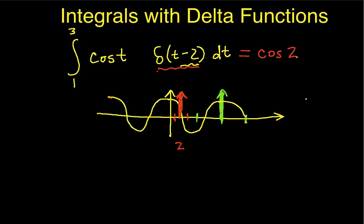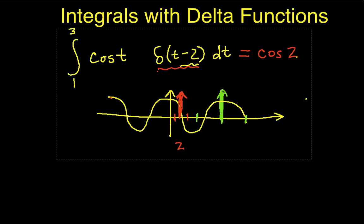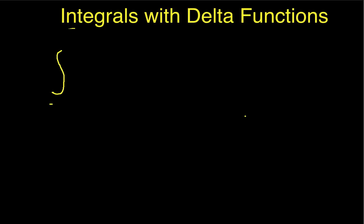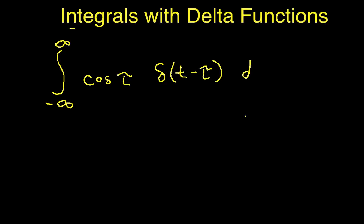So let's now introduce an integral. This is the integral that will look initially like we've gone through a lot of work to do something completely pointless, but trust me, there is a reason for doing it. We're looking at the integral from minus infinity to infinity of cosine of tau times delta of tau minus t, d tau. I've changed the variable of integration to tau so that I could use t in my delta function.